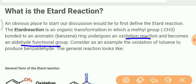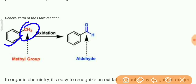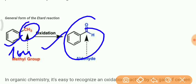This reaction has also appeared in board exams and previous year papers, so it is very important to understand it. Let me discuss a simple general form of the Etard reaction. This is a methyl group attached to benzene — it's called toluene. Toluene converts to the aldehyde after oxidation.